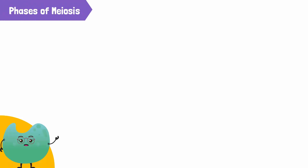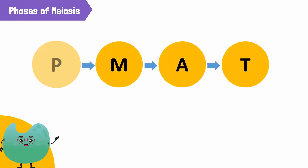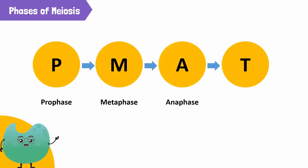You can remember the phases as P-MAT. P is for prophase, M is for metaphase, A is for anaphase, and T is for telophase.